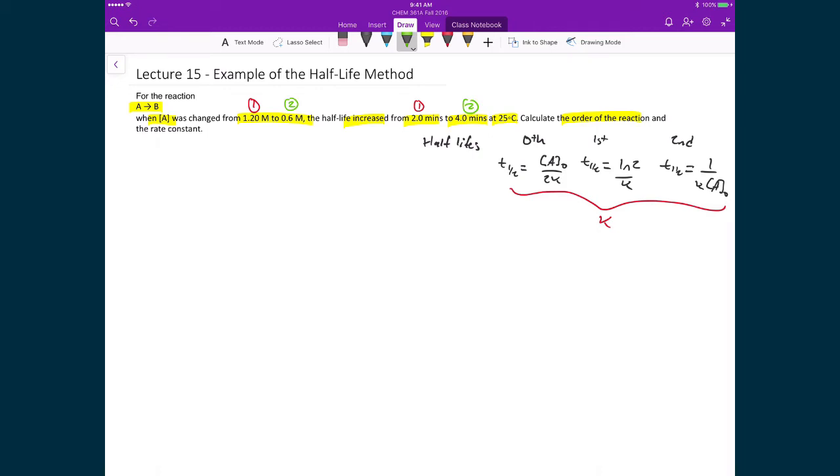Where do these half-life expressions come from? Let's just do the zeroth order real quick. For the zeroth order, we would start with our integrated rate law expression, which, if you remember, was the concentration of A is equal to negative K times T plus the concentration of A0.